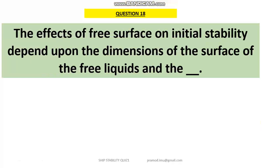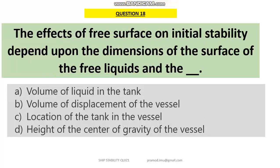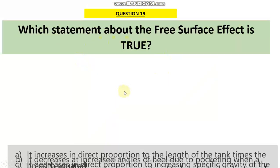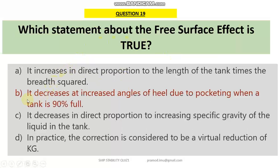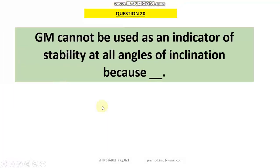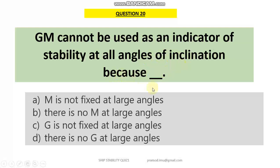Question 18: the effect of free surface on initial stability depends on the dimensions of the surface of the free liquid. If you look at the formula for free surface effect you get option B — the volume of displacement of the vessel. Question 19: which statement about free surface effect is true? Option B: it decreases at increased angles of heel due to pocketing when a tank is 90% full. Question 20: GM cannot be used as an indicator of stability at all angles of inclination because at higher angles the metacenter is no longer a fixed point — so A is the answer.